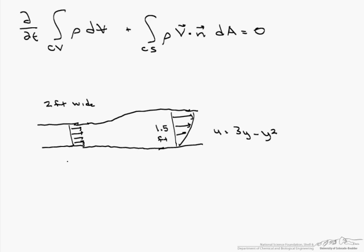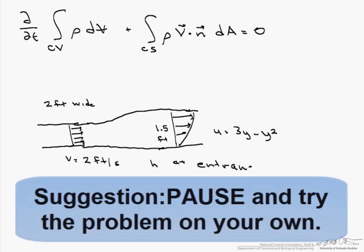So if the downstream height of the channel is 1.5 feet, and the uniform velocity here is 2 feet per second, what we are looking for is the height at the entrance of the channel.